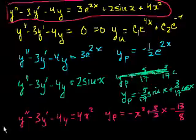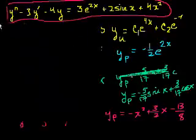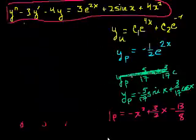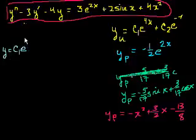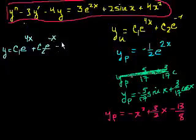And let me clean up some space, because I want everything to be on the board at the same time. So the solution is going to be, I don't want that to be deleted. The solution is going to be, I'll do it in baby blue, it's going to be the solution to the homogeneous, c1e to the 4x, plus c2e to the minus x, minus 1 half e to the 2x.